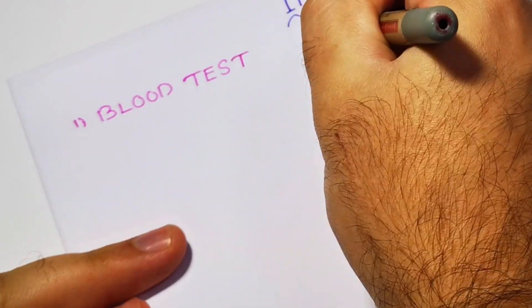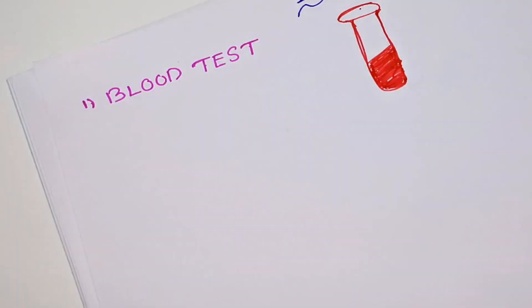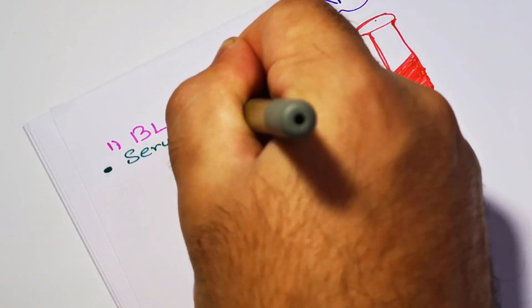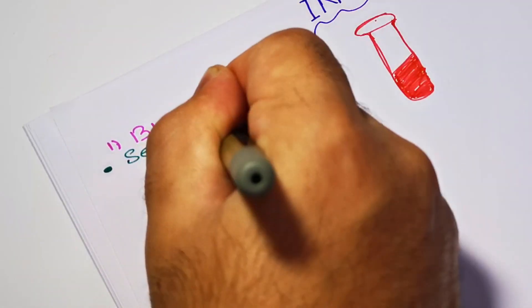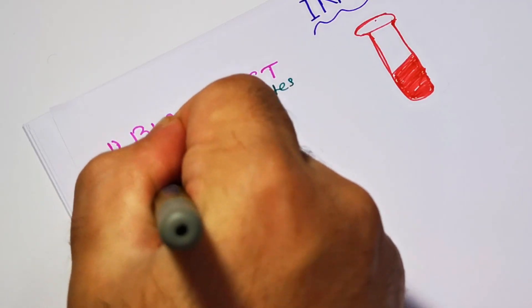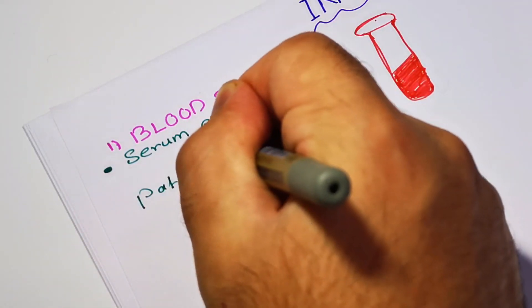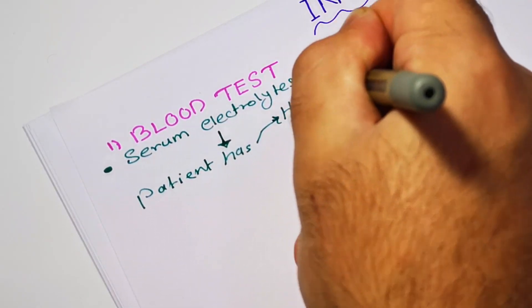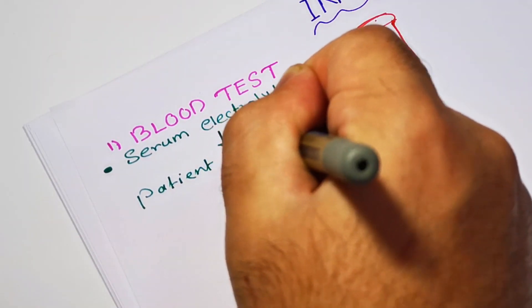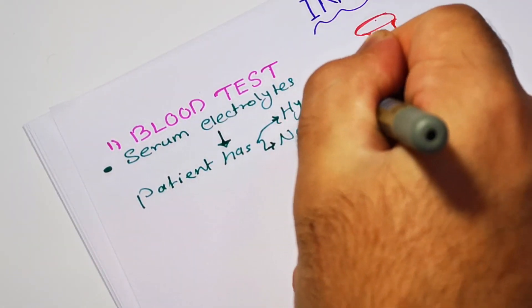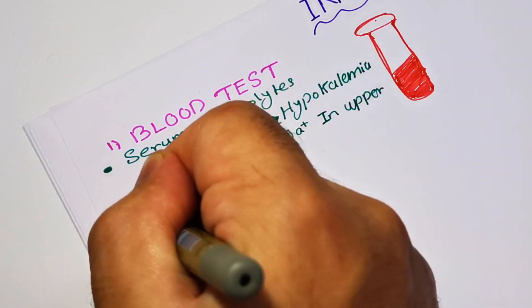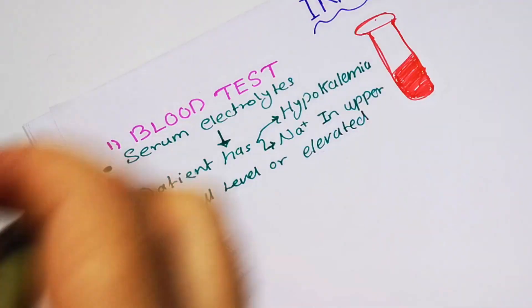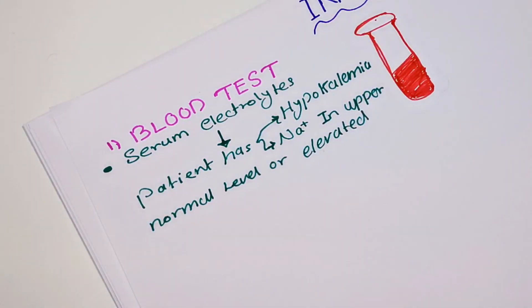First of all, you will start with a blood test, which will include the following. First, we have serum electrolytes. Serum electrolytes are very important to obtain in patients with hyperaldosteronism because these patients may develop hypokalemia — a serum potassium level less than 3.5 milliequivalent per deciliter. The sodium level may also be in the upper normal range or mildly elevated.